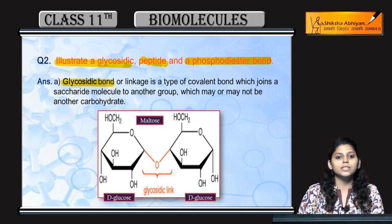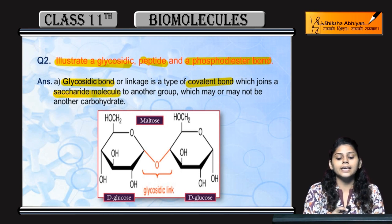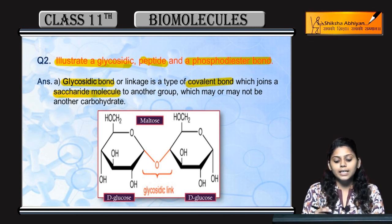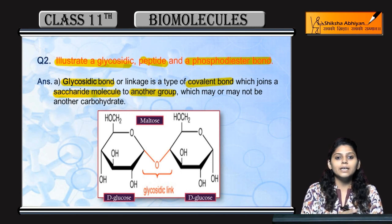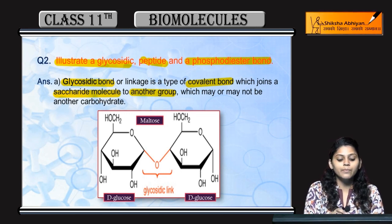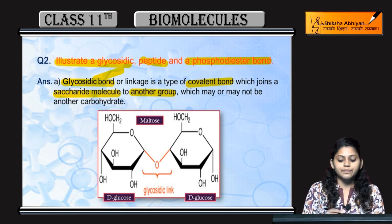पहले बात करेंगे glycosidic bond की। Glycosidic bond कैसे बनता है? Covalent bond है, बनता है एक saccharide molecule के link करने से to another group। Means, एक monosaccharide molecule, किसी दूसरे monosaccharide molecule या फिर किसी और molecules के साथ linkage बनाएगा, bond बनाएगा। उसे glycosidic bond कहते हैं।